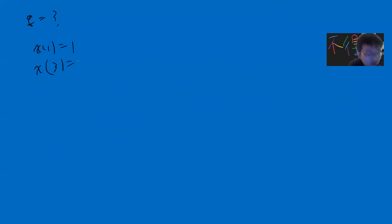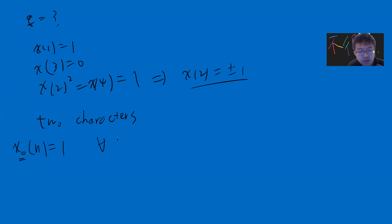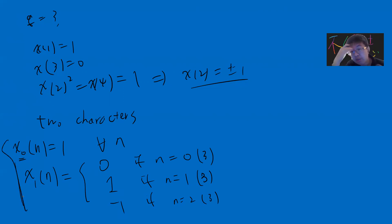For q = 3: χ(1) = 1, χ(3) = 0. Since χ(2)² = χ(4) = χ(1) = 1, χ(2) can be ±1, giving two choices. This yields two characters: the trivial character χ₀ where χ₀(n) = 1 for all n coprime to 3, and a nontrivial character χ where χ(n) = 0 if n ≡ 0 mod 3, χ(n) = 1 if n ≡ 1 mod 3, and χ(n) = −1 if n ≡ 2 mod 3.